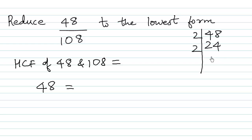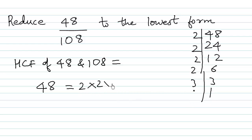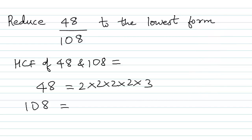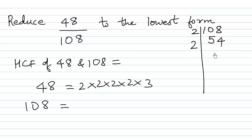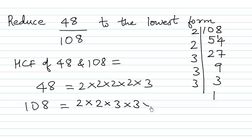Factorizing 48: we get 2 × 2 × 2 × 2 × 3. Factorizing 108: we get 2 × 2 × 3 × 3 × 3. Looking at what is common: one 2 is common, another 2 is common, and then a 3 is common.